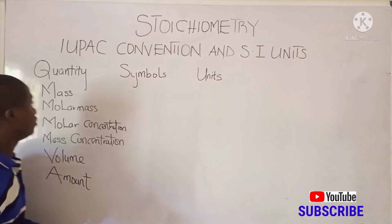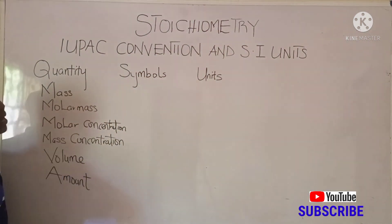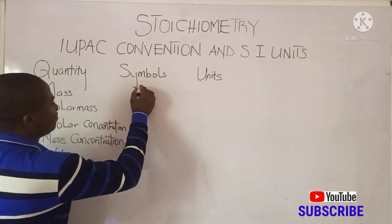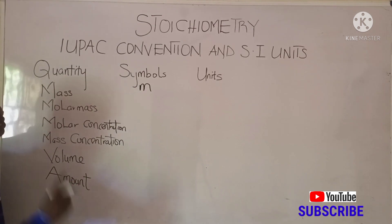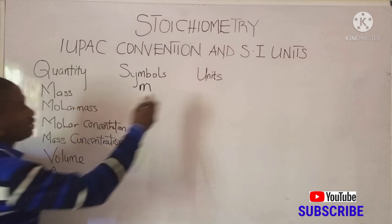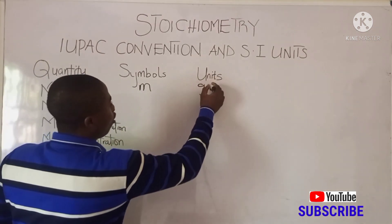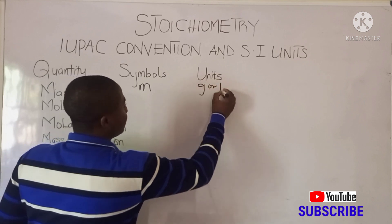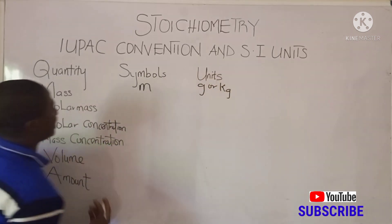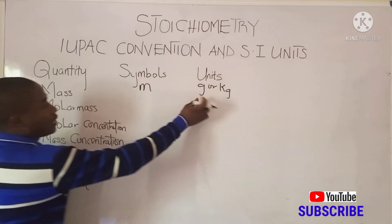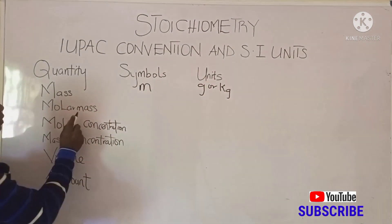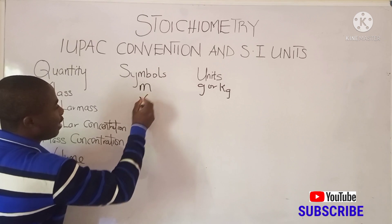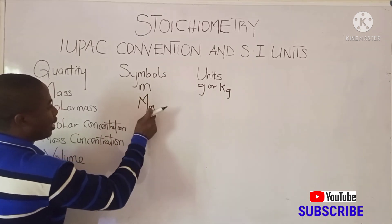The first quantity on the board is called mass. The symbol of mass is m, and the unit is grams or kilograms. So mass, symbolized as m, is measured in grams or kilograms. Now, talking about molar mass, its symbol is MM.